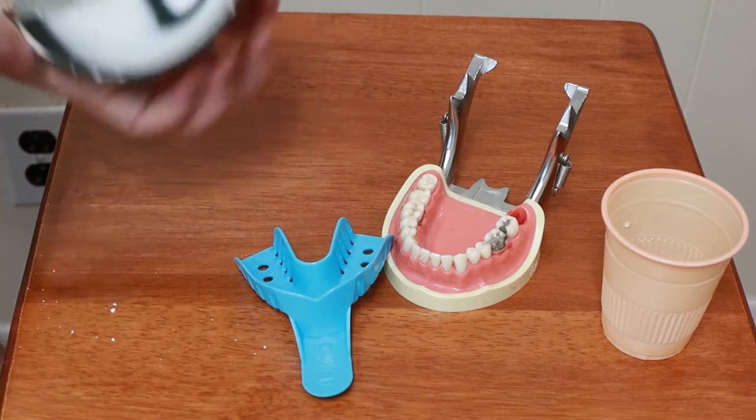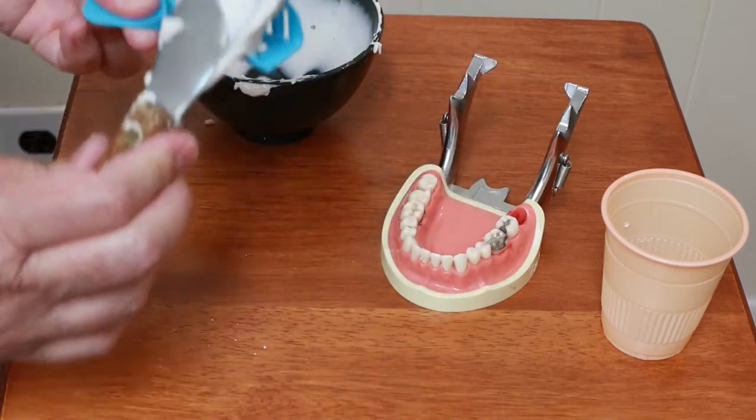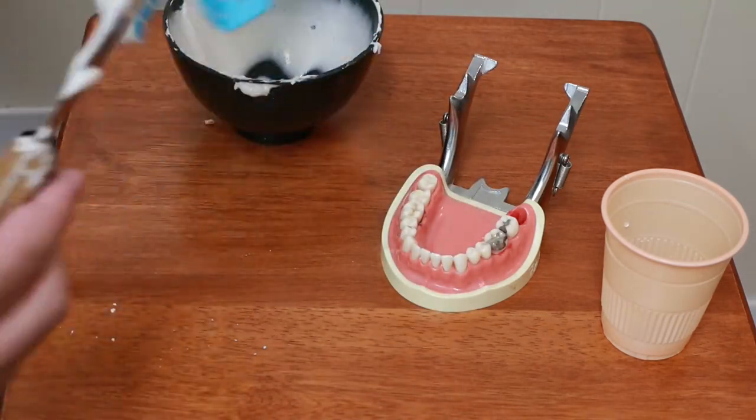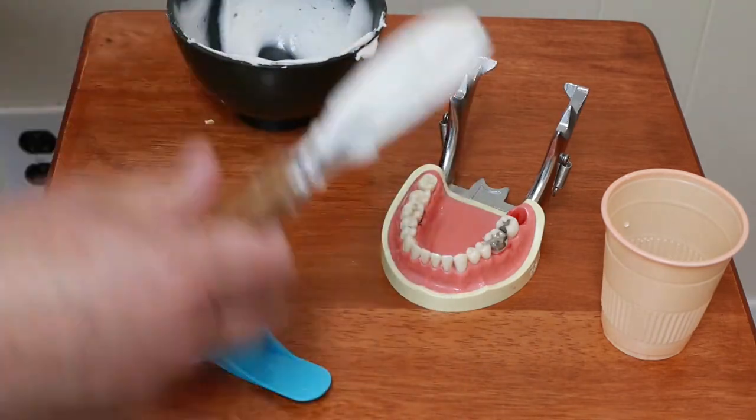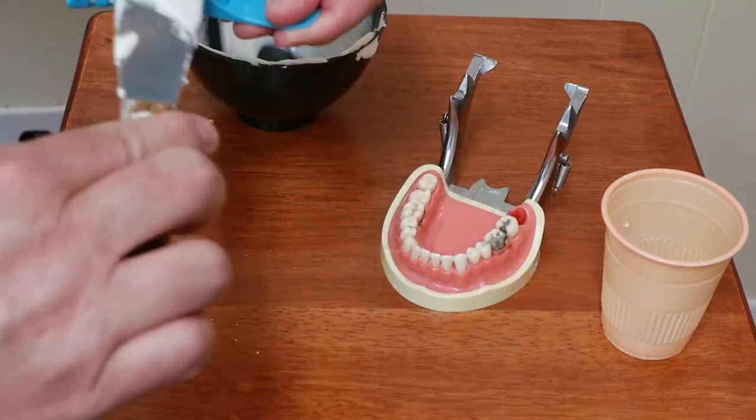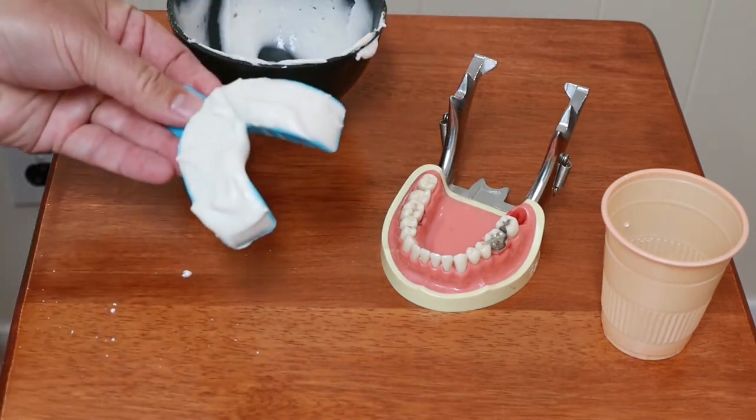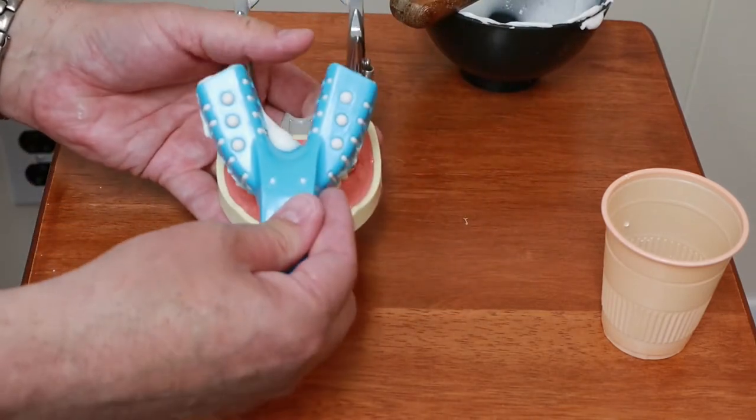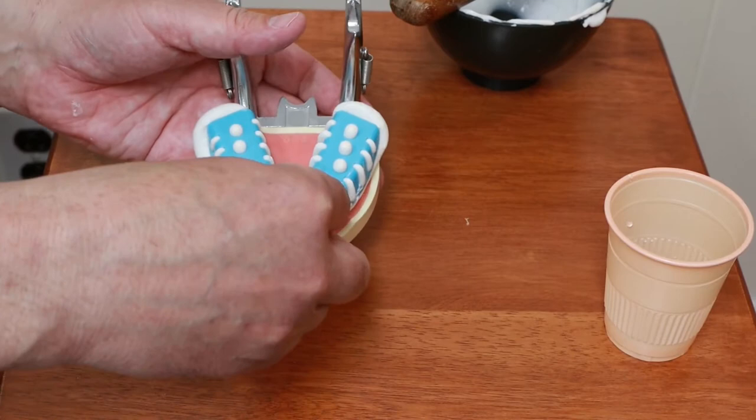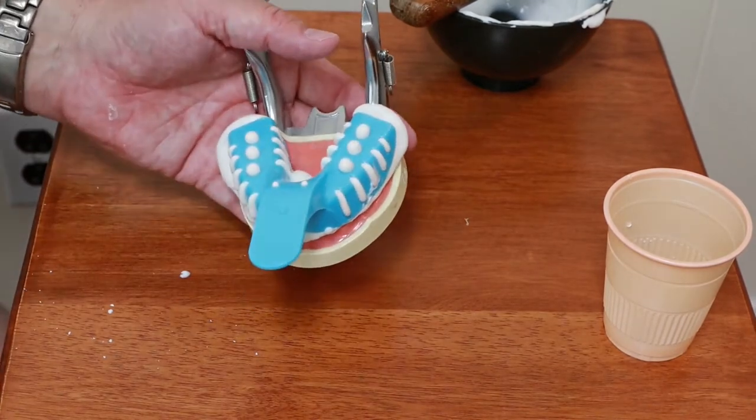Once it's mixed then I'll just load it up onto my spatula and load the impression tray. And then we take the mold of the lower teeth. And again we just give that a couple of minutes to set up.